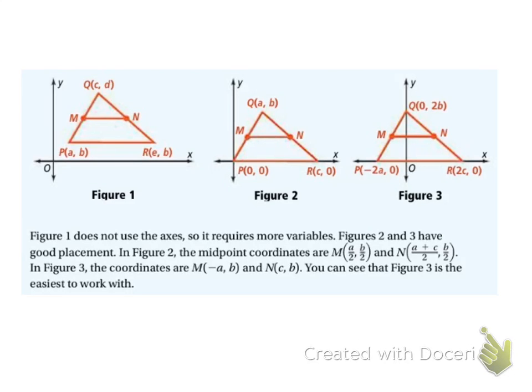This is 6.8a of geometry. We're going to look at shapes on a graph again, but now without any labels on our axes — we're going to use letters instead. Looking at this picture, where we put our shape will affect how hard or easy it is for us.